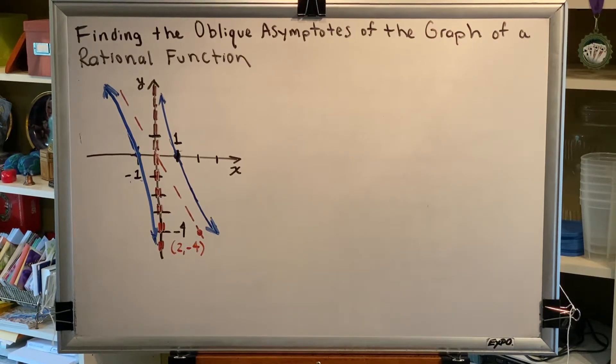The topic of this video is finding the oblique asymptotes of the graph of a rational function. Let's look at a problem.